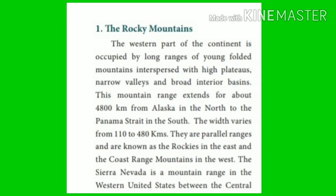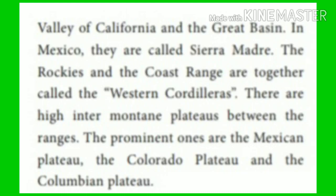First we are going to see about the Rocky Mountains. The western part of the continent is occupied by long ranges of young folded mountains, interspersed with high plateaus, narrow valleys and broad interior basins. This mountain range extends for about 4,800 km from Alaska in the north to the Panama Strait in the south. The width varies from 110 to 480 km. They are parallel ranges, known as the Rockies in the east and the Coast Range mountains in the west. The Sierra Nevada is a mountain range in the western United States between the Central Valley of California and the Great Basin. In Mexico they are called the Sierra Madre. The Rockies and the Coast Range are together called the Western Cordilleras. There are high inter-mountain plateaus between the ranges — the prominent ones are the Mexican Plateau, the Colorado Plateau, and the Columbian Plateau.